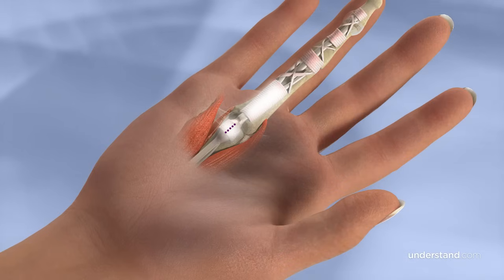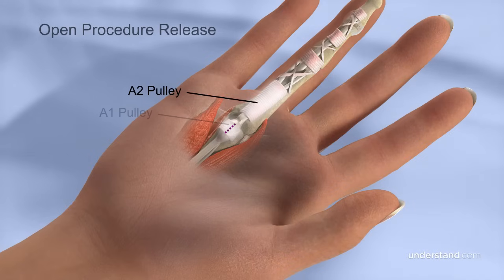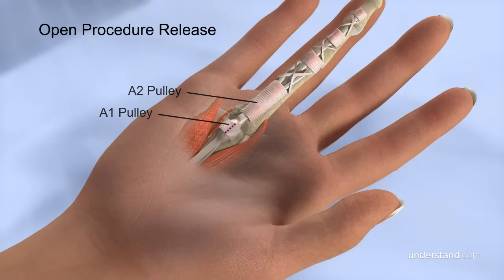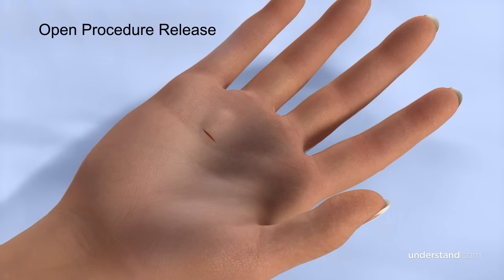Because of the presence of the strong A2 pulley, releasing the A1 pulley has no negative effect on the motion or strength of your hand.